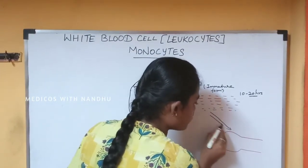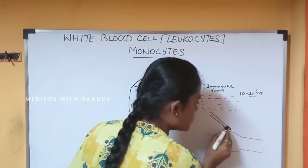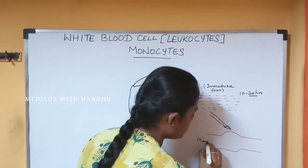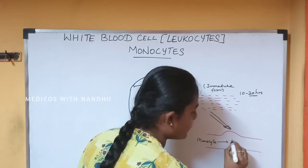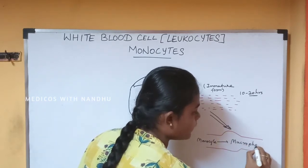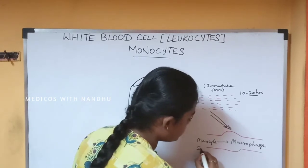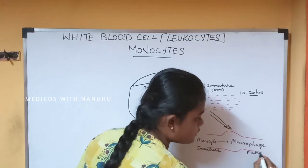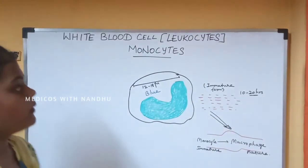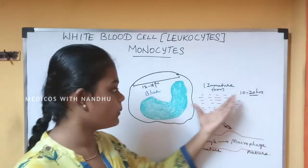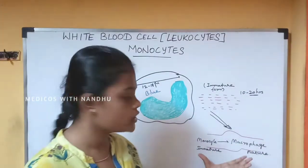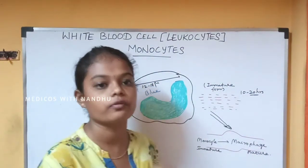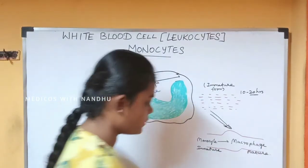After 10 to 20 hours in the blood, the monocyte does not stay in the blood — it migrates directly to the tissues. In the tissues, the monocyte becomes a macrophage. So the monocyte is the immature form and the macrophage is the mature stage.